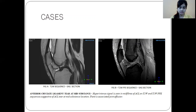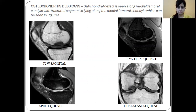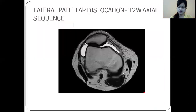This is the first case, in which we see a mid-substance high signal on the T2-weighted sequence and FLAIR sequence as well — this is an ACL tear. This is a case of osteochondritis dissecans, in which we can see a subchondral defect at the medial femoral condyle visible on all sequences, with a fractured fragment lying adjacent to it.